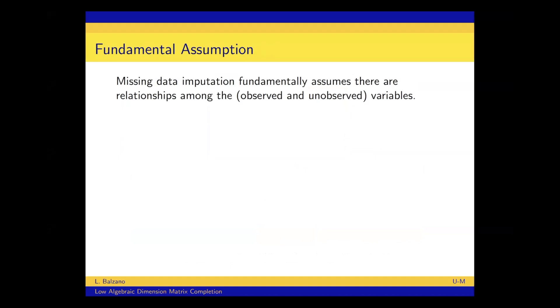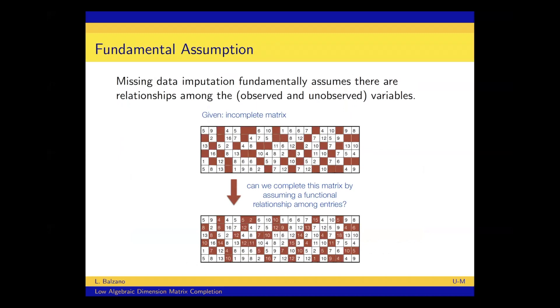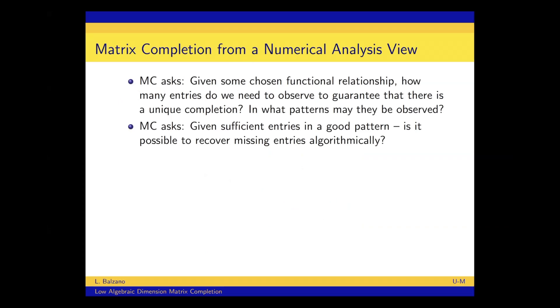Maybe the most obvious fundamental assumption that all of us are making when we're trying to do missing data imputation is that there is some functional or some relationship between the observed and unobserved variables. And so what I'm going to talk about is in matrix completion, is there a functional relationship among these entries that we can assume and then that allows us to impute the missing values?